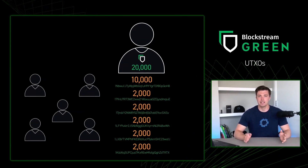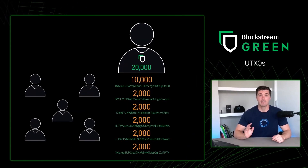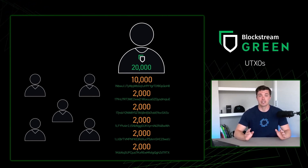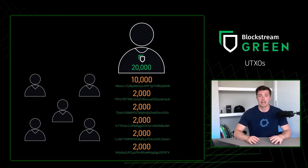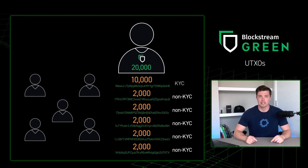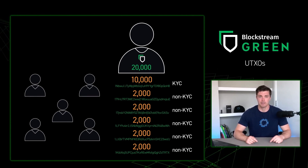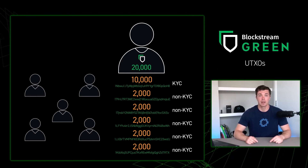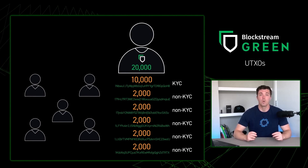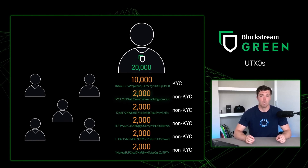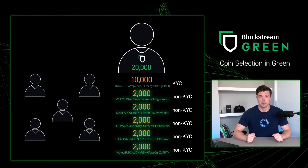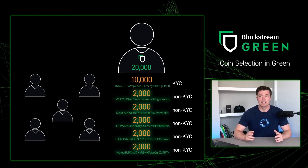Going back to the example with the KYC exchange and Bob's 5 friends: 5 of the 6 transactions in Bob's wallet are not linked to his name at all. Of the 6 transactions, there is one that is linked to his name — the transaction from the KYC exchange. If Bob wants to transact with Alice or anyone else in the future with anonymous Bitcoin, he's going to have to pick one or a couple of the UTXOs that his friends sent him. Let's go to our Green Wallet to see how we do this.